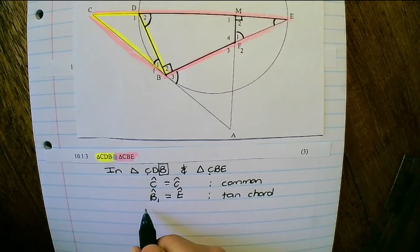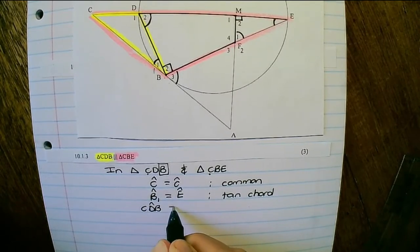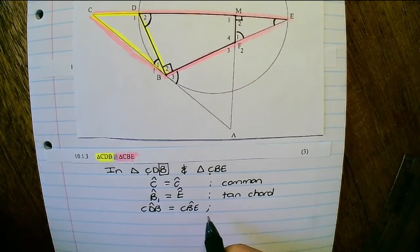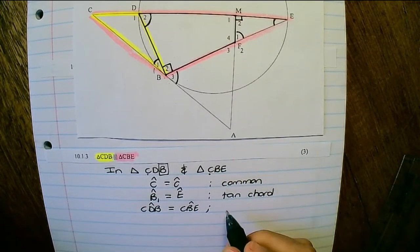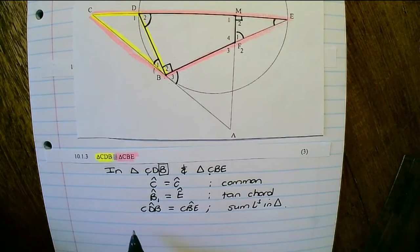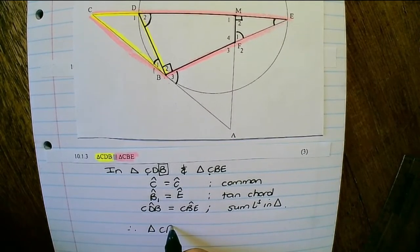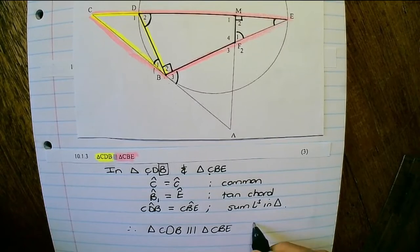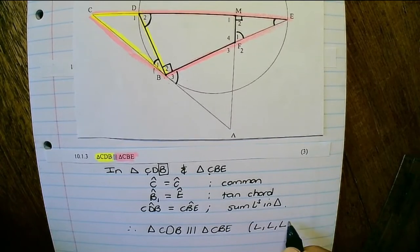That means that angle CDB would be equal to angle CBE, the last angle, which I still need to prove. And I can say sum of angles in a triangle. Therefore, triangle CDB is similar to triangle CBE, and remember to state the reason: angle, angle, angle.